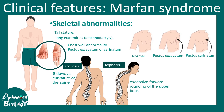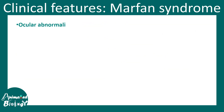There could be scoliosis, meaning sideways curvature of the spine, and kyphosis, meaning excessive forward rounding of the upper back. There could also be hypermobility of the joints. There are so many abnormalities with respect to the skeletal system because fibrillin proteins are really important in the context of cartilaginous tissues.